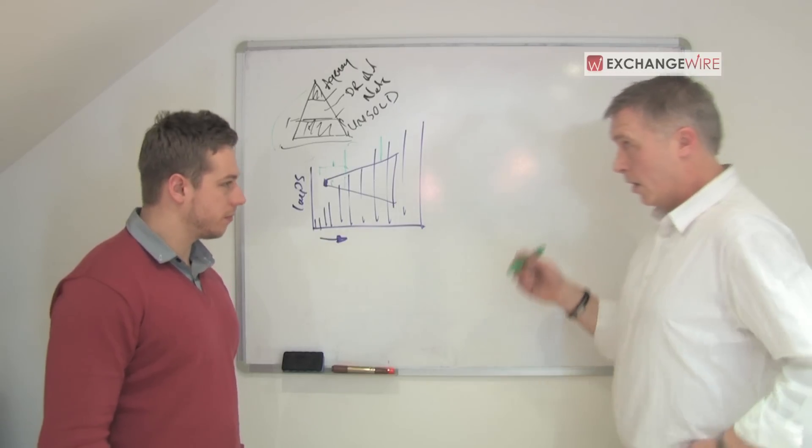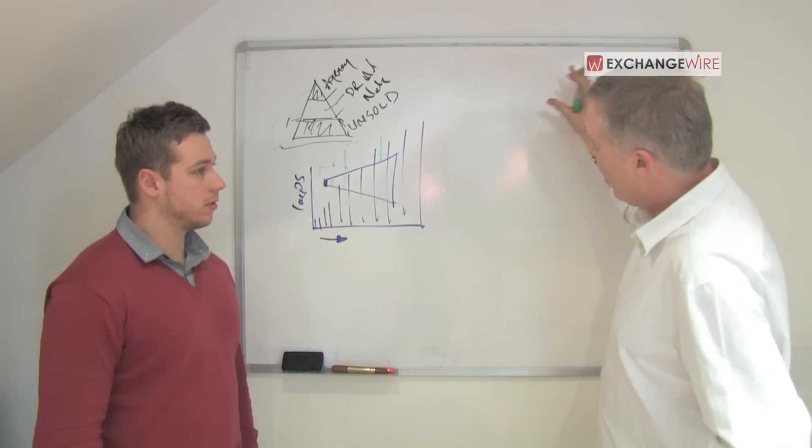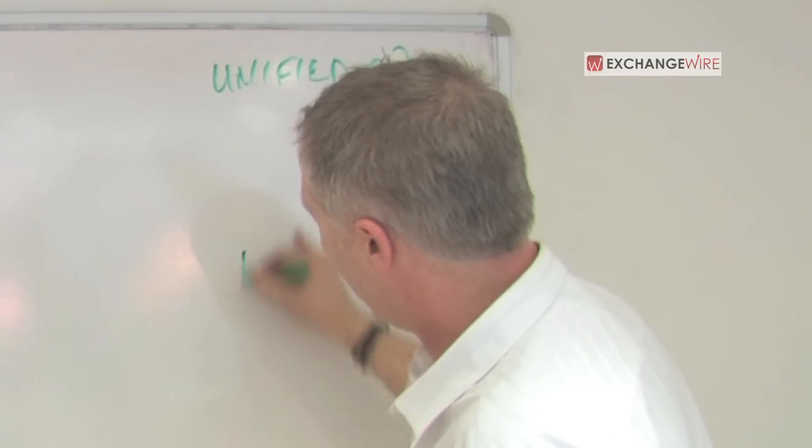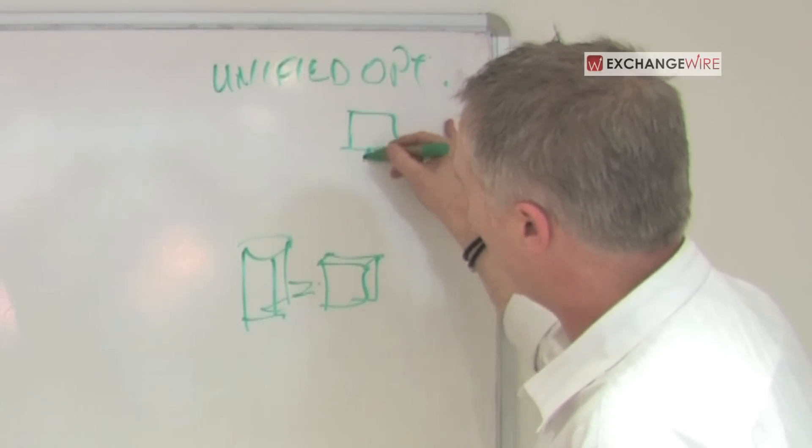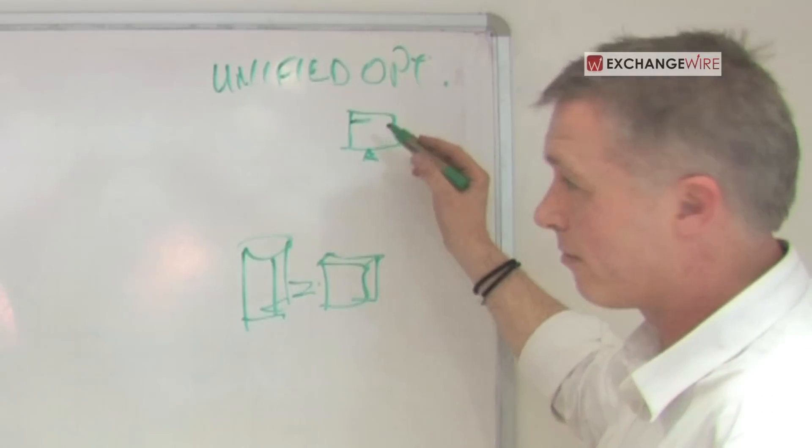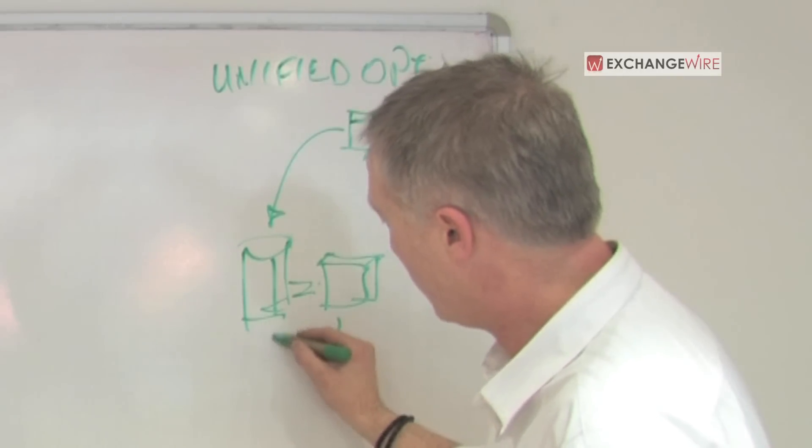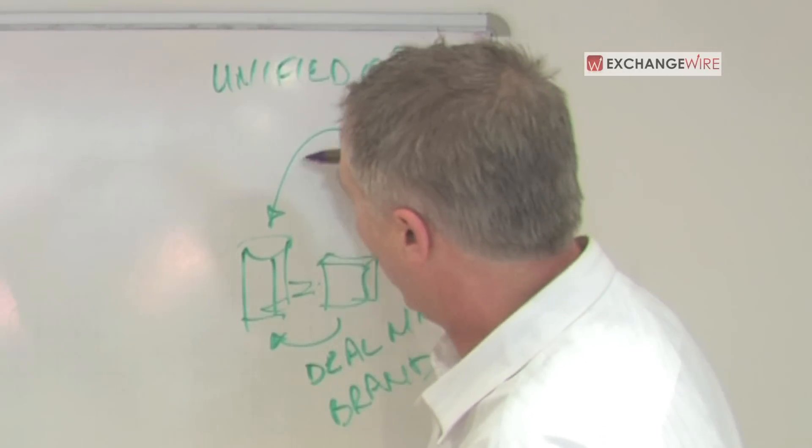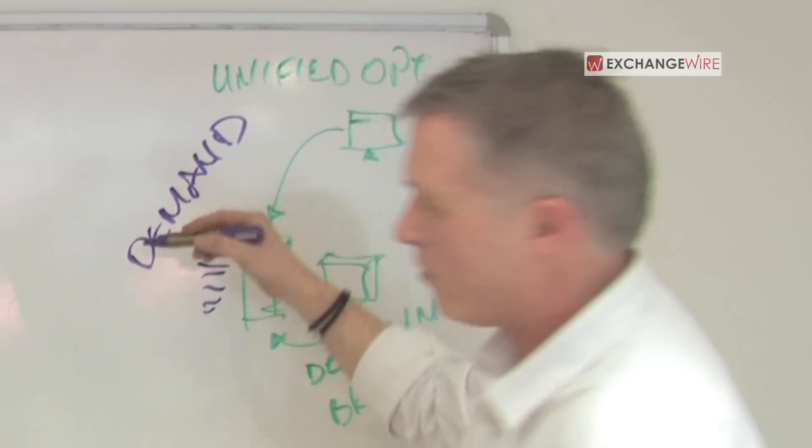So to move on to what we term is a holistic ecosystem, we implement what we call unified optimization. And unified optimization, basically we have the PubMatic platform API'd into the publisher ad server. So when a user lands on the publisher's site, the publisher calls our tags out, and so what we have happening there is two things occurring in synchronicity. We have the PubMatic tags being called, and we also have through the API into our platform, we have deal management running, and we have brand control running at the same time.